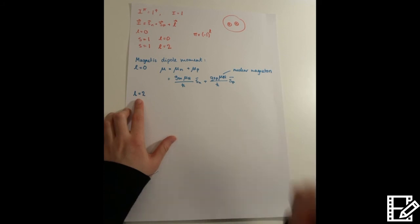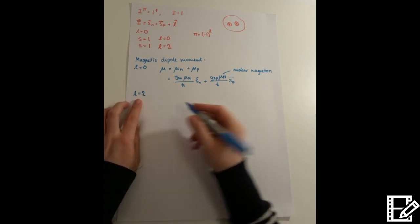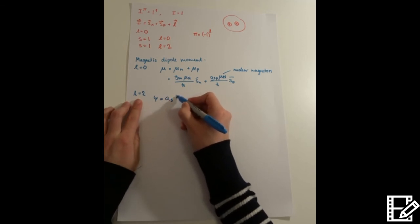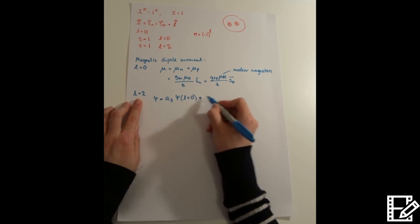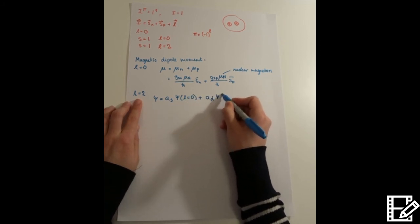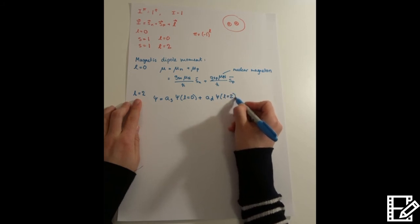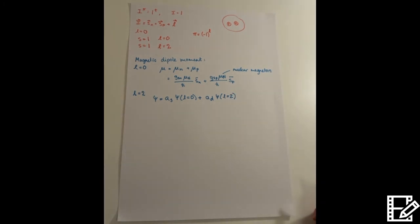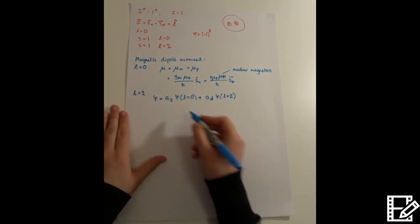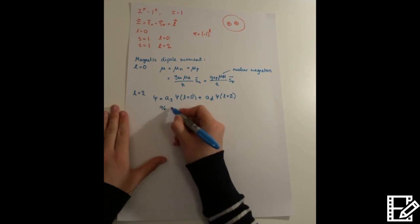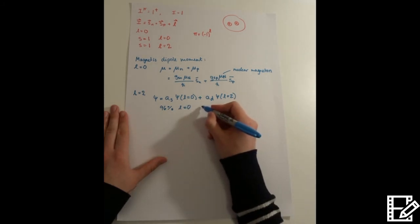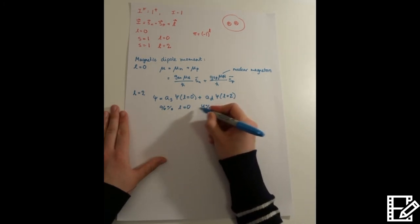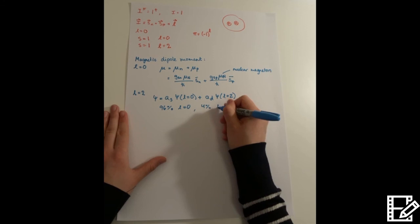What we would then have is a mixture of states. So the wave function for the deuteron would look like this. A mixture of the l equals 0 state and the l equals 2 state. Now we actually observe that 96% is the l equals 0 state and about 4% is the l equals 2 state.